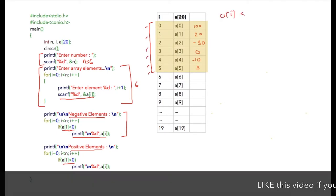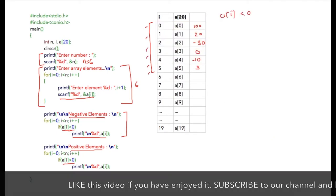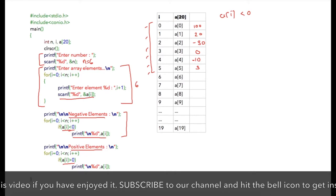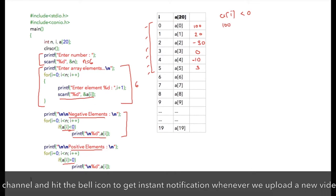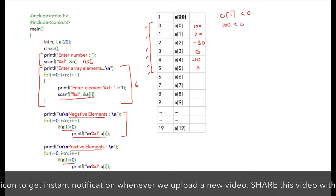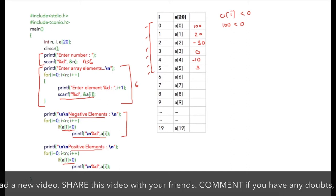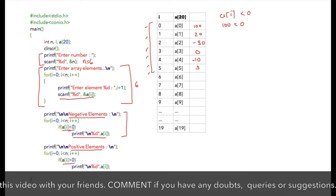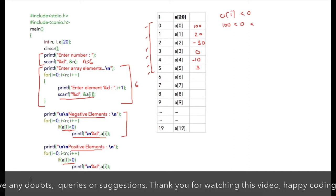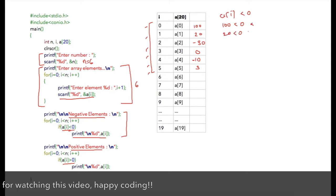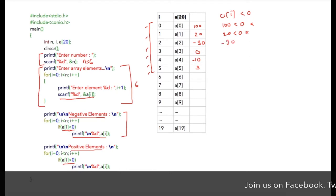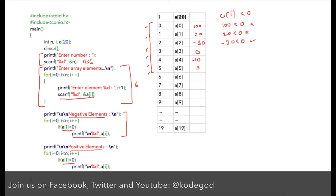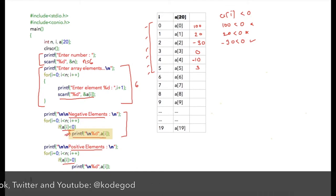Iteratively we check all values with the condition a[i] < 0. In the first iteration, a[0] which is 100 — less than 0 is false, so it will not be printed. Similarly, 20 less than 0 is also false. In the next iteration, -30 less than 0 is a true condition.